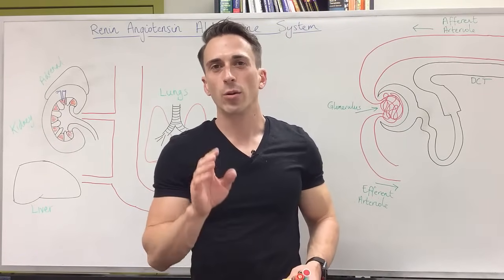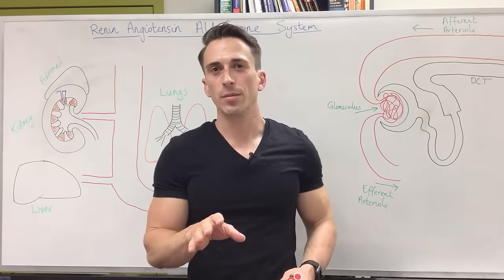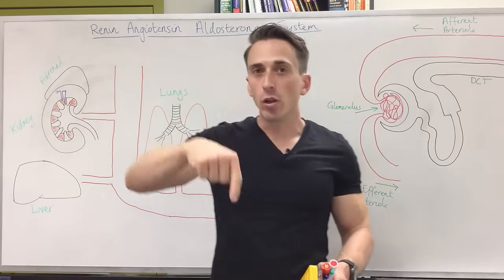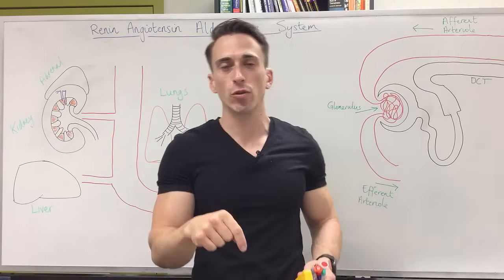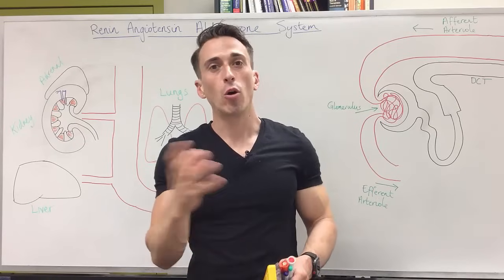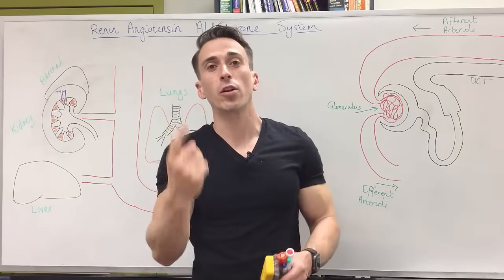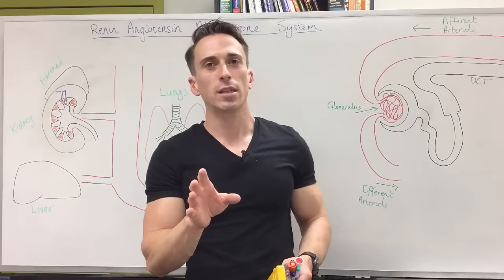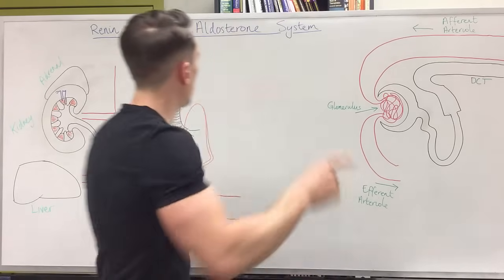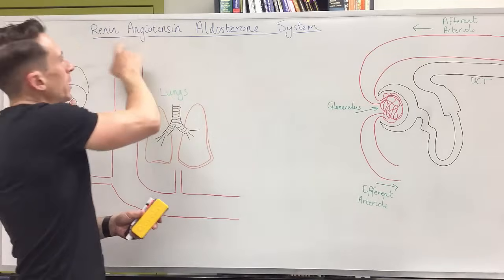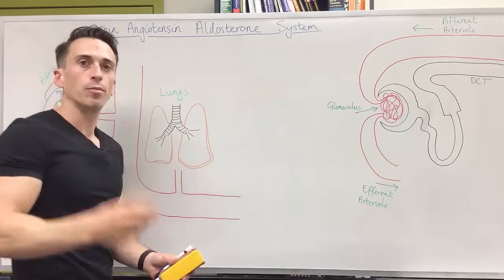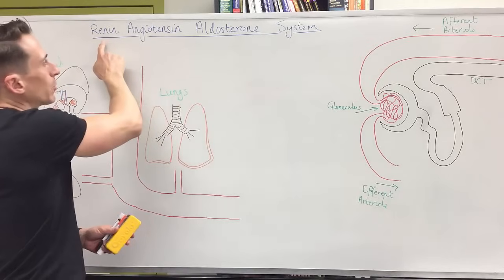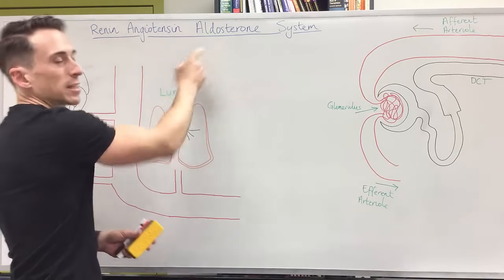The renin-angiotensin-aldosterone system is a system that gets activated when our blood volume drops and our blood pressure drops. The whole purpose of it is to increase blood volume and increase blood pressure. Let's have a look at how this system works. Renin-angiotensin-aldosterone — three different terms, and they're released in that particular order.